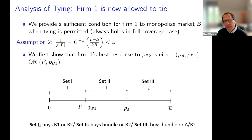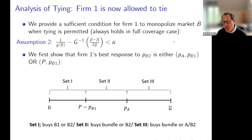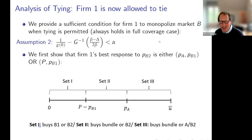In the general model, we analyze tying. We introduce assumption two here, which is a sufficient condition for the monopolization effect of tying to go through. It's basically saying it's more likely to hold if alpha is large, and also more likely to hold if beta over delta is large — so if the network effect is much more important than the quality differential. And it always holds if we have full coverage in market A.